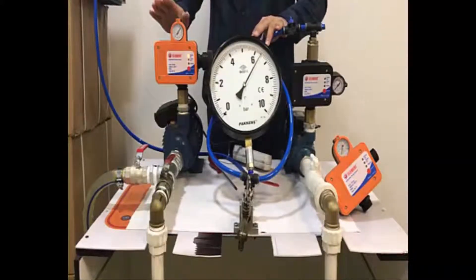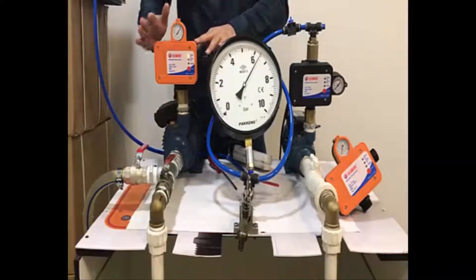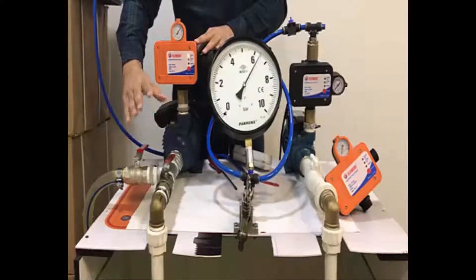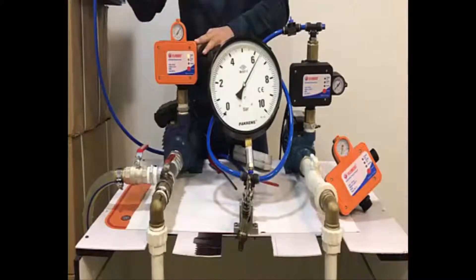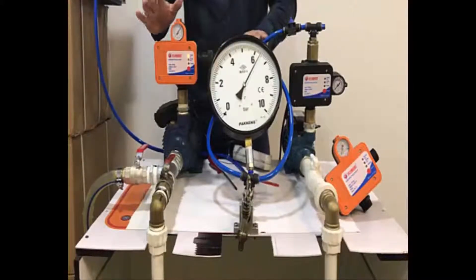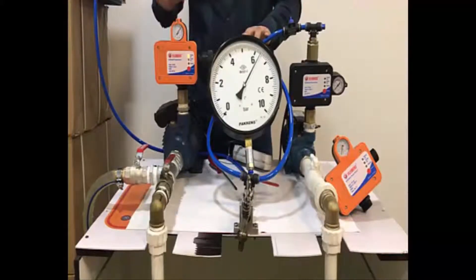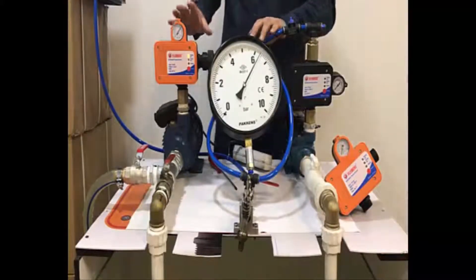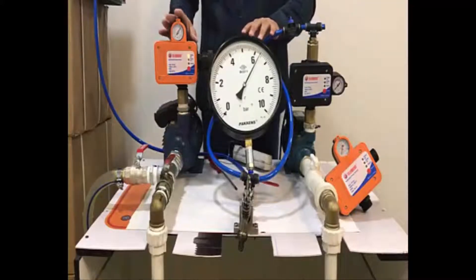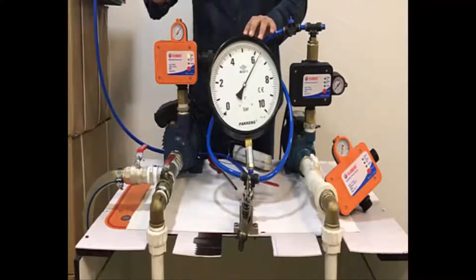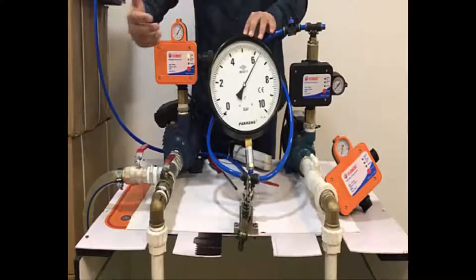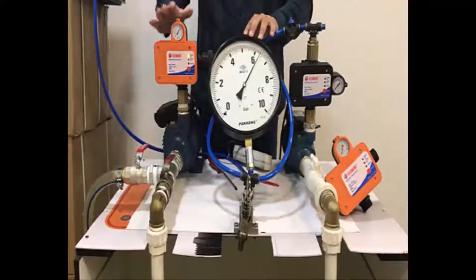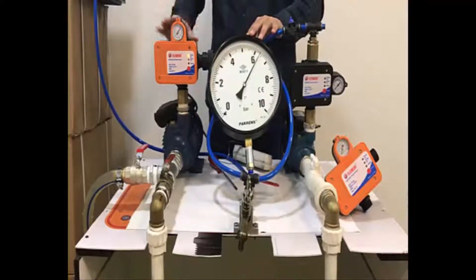As you see, the pump saw that there was no water in the system and it tried. For the first minute it tries every five or six seconds to check if there is water in the system or not. After the first minute it will try every 15 minutes. If the water comes after, for example, 15 minutes or 30 minutes, our device will see it and start to pump again.